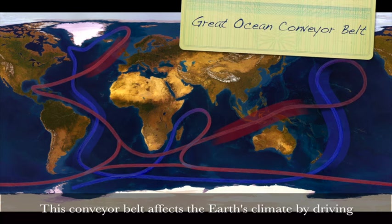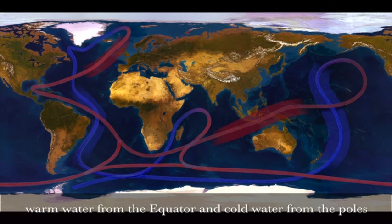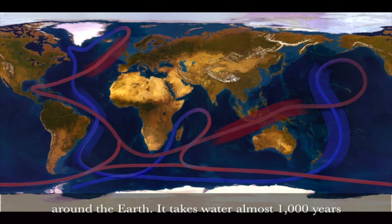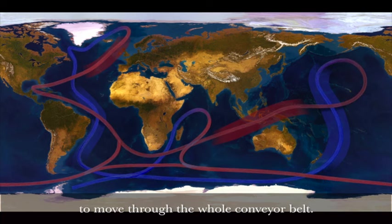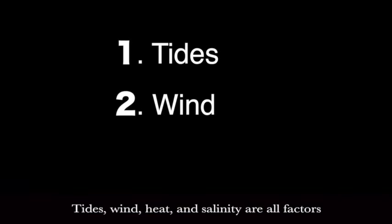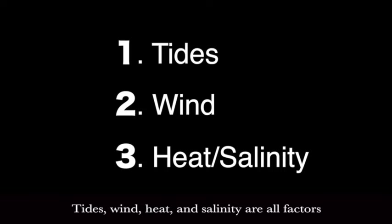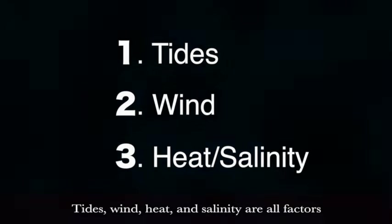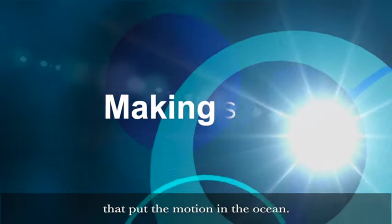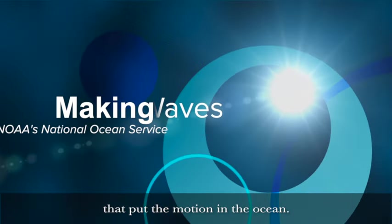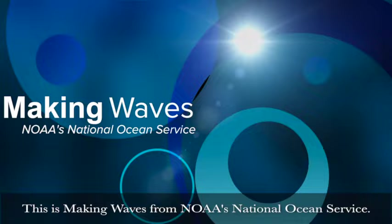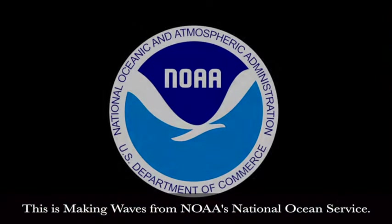This belt affects the Earth's climate by driving warm water from the equator and cold water from the poles around the Earth. It takes water almost a thousand years to move through the whole conveyor belt. So there you have it — tides, wind, and heat and salinity are all factors that put the motion in the ocean. This is Making Waves from NOAA's National Ocean Service.